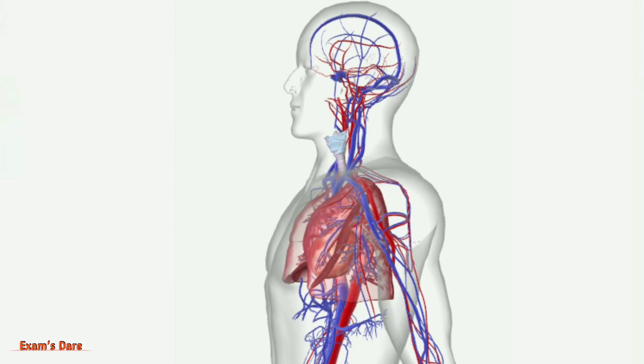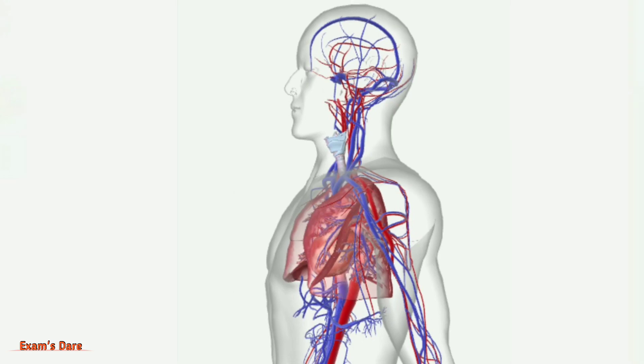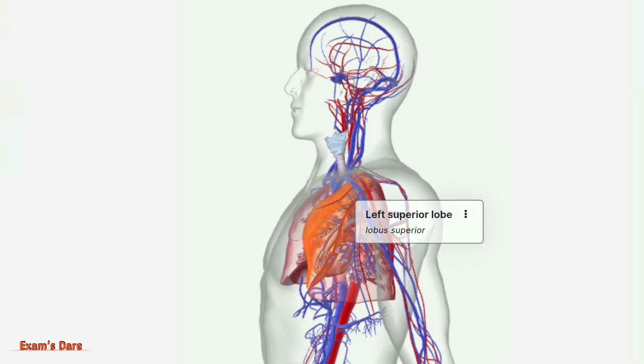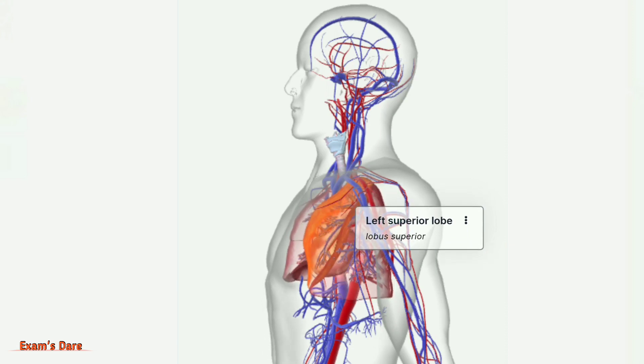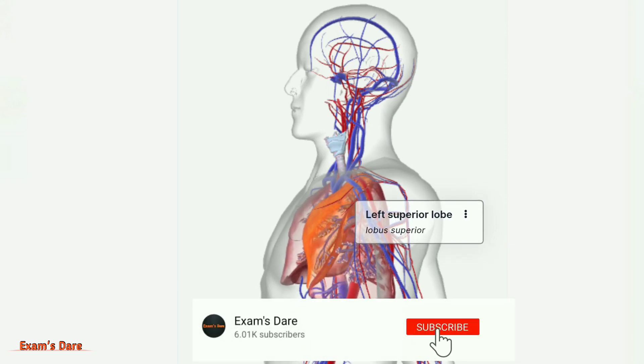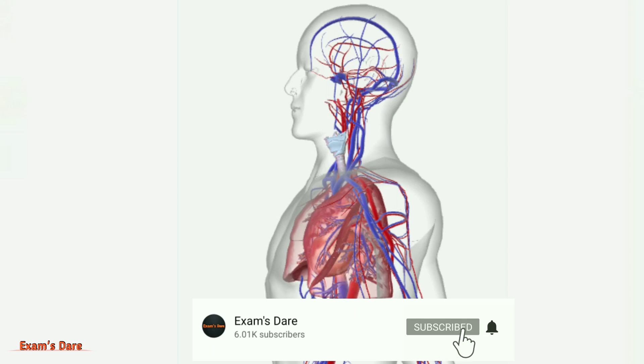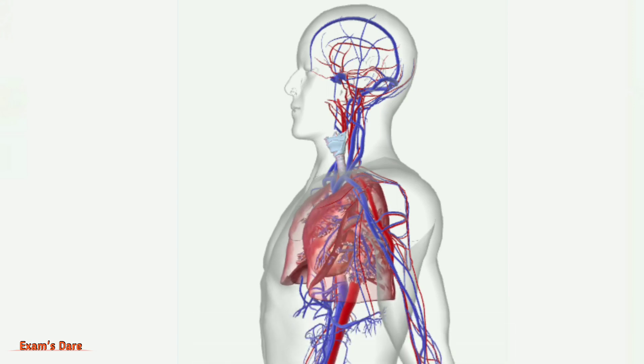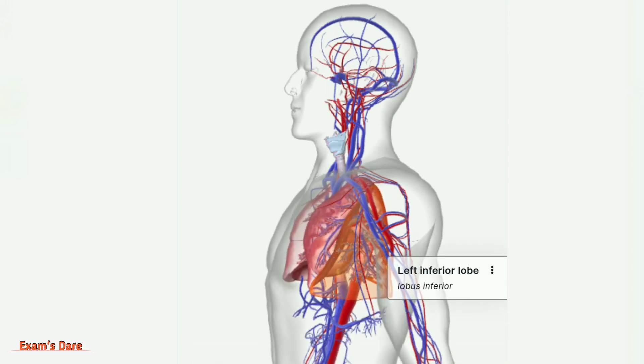The left lung is divided into two lobes by an oblique fissure. The upper part is called the left superior lobe and the lower part is called the left inferior lobe.